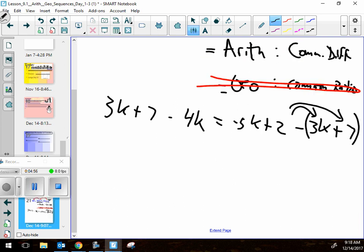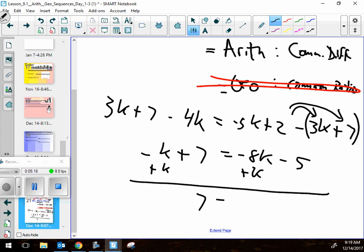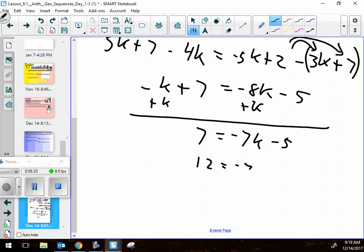So you should have had 3K plus 7 minus 4K has to equal negative 5K plus 2 minus - I've got to be careful here because there's two terms. I've got to pull a parenthesis on that. Did you catch that? Do you have to distribute the negative to both parts? So I'm going to have negative K plus 7 has to equal negative 8K minus 5. I'm going to add K to both sides. 7 equals negative 7K minus 5. Add 5. 12 equals negative 7K, and then K is negative 12 sevenths exactly.